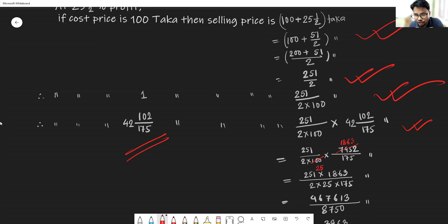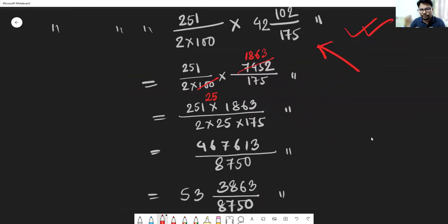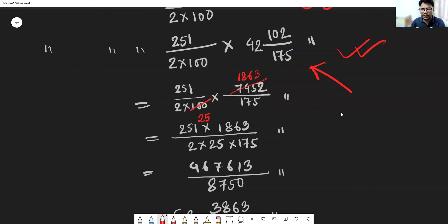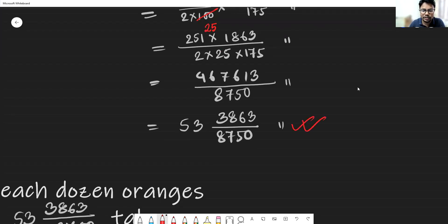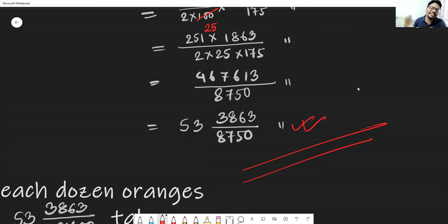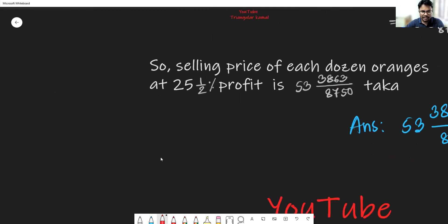Please do not calculate directly with the mixed fraction — first convert the mixed fraction into an improper fraction, then find the reduced form. From the previous answer, 42 whole 102/175 converts to 7,452 over 175. Doing the division and simplification, and multiplying the numerator and denominator numbers, then converting back to a mixed fraction, the selling price at 25 and one-half percent profit is 52 whole 3,863 over 8,750 Taka per dozen oranges.